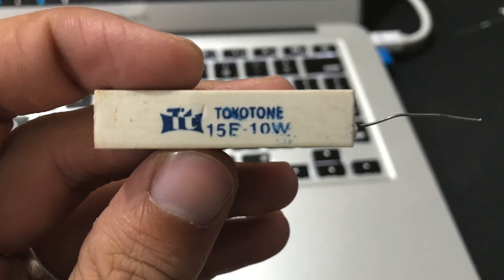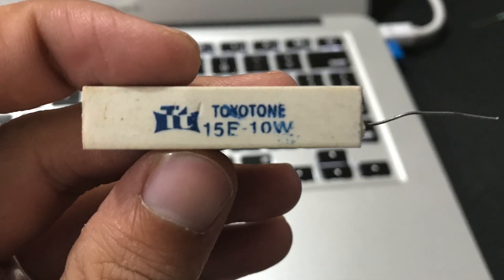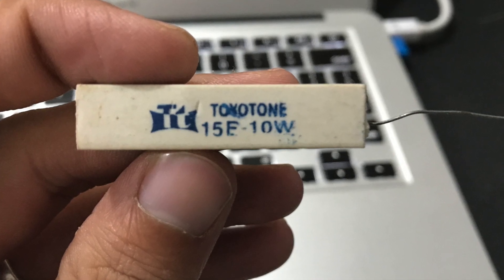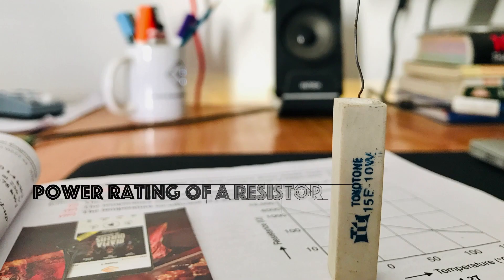On some resistors, you will find a number is mentioned in watts. Like as you can see here on this resistor, 10 watts is mentioned. What this 10 watt indicates? It basically indicates the power rating of a resistor.